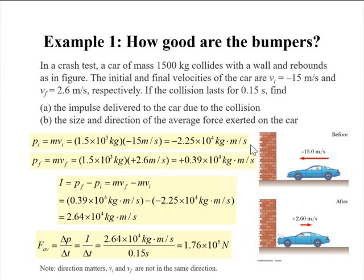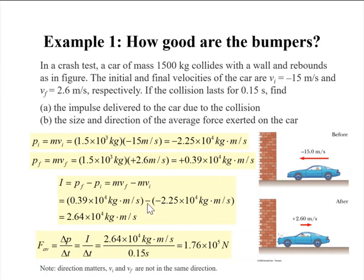Kilogram·meters per second are the units for momentum. The momentum after the collision is mass times the velocity after the collision: 1500 kilograms times 2.6 meters per second to the right, giving us positive 0.39 times 10 to the fourth kilogram·meters per second. So the impulse is the change in momentum: MVF minus MVI. Don't forget direction. The initial momentum had a negative sign, so subtracting it becomes an add, and we end up with a total of 2.64 times 10 to the fourth kilogram·meters per second for our impulse — that's the answer to part A.